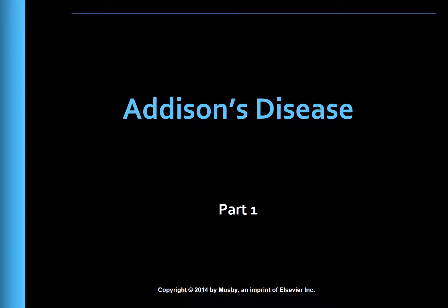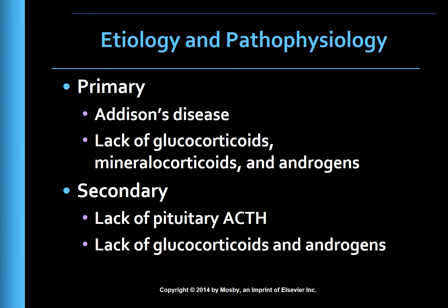Adrenocortical insufficiency or hypofunction of the adrenal cortex may be from a primary cause, referred to as Addison's disease, or a secondary cause which is lack of pituitary ACTH secretion. In Addison's disease, amounts of all three classes of adrenal corticosteroids — glucocorticoids, mineralocorticoids, and androgens — are reduced. In secondary adrenocortical insufficiency, corticosteroids and androgen levels are deficient but mineralocorticoids are usually normal. ACTH deficiency may be caused by pituitary disease or suppression of the hypothalamic-pituitary axis due to administration of exogenous corticosteroids.